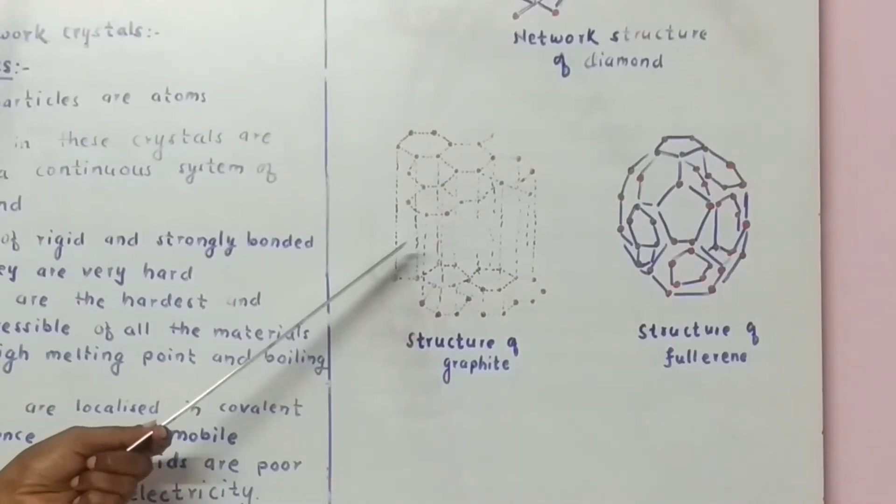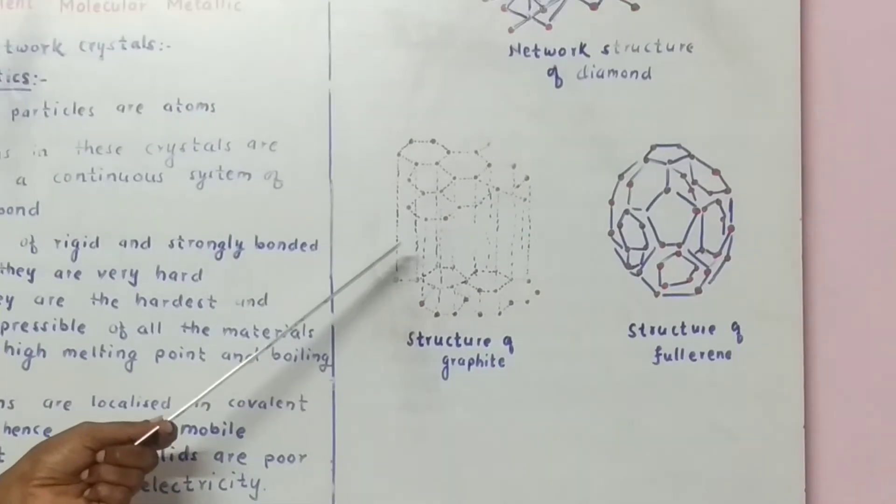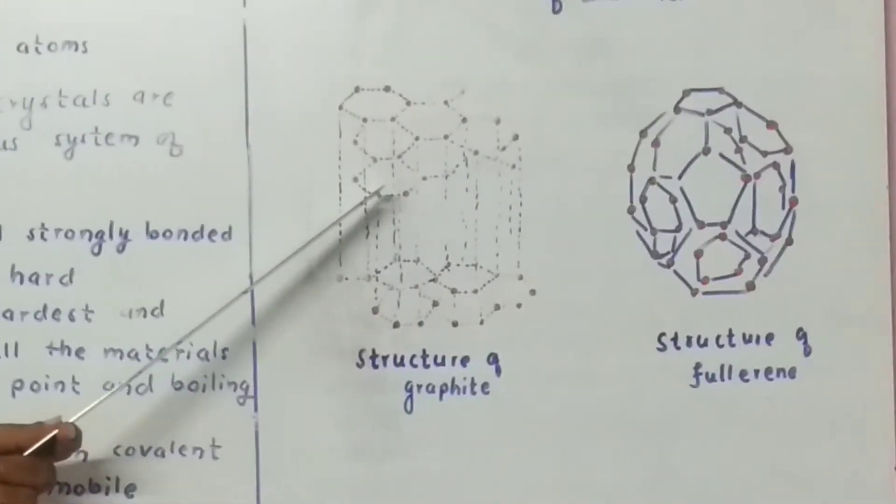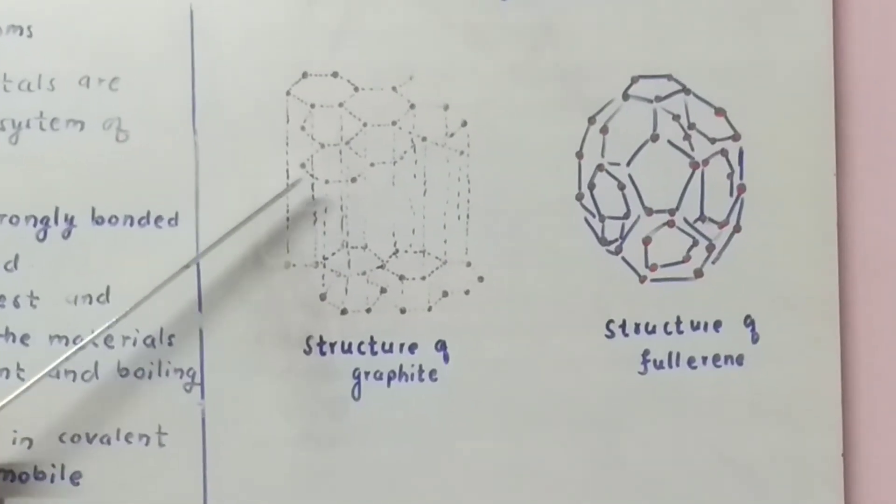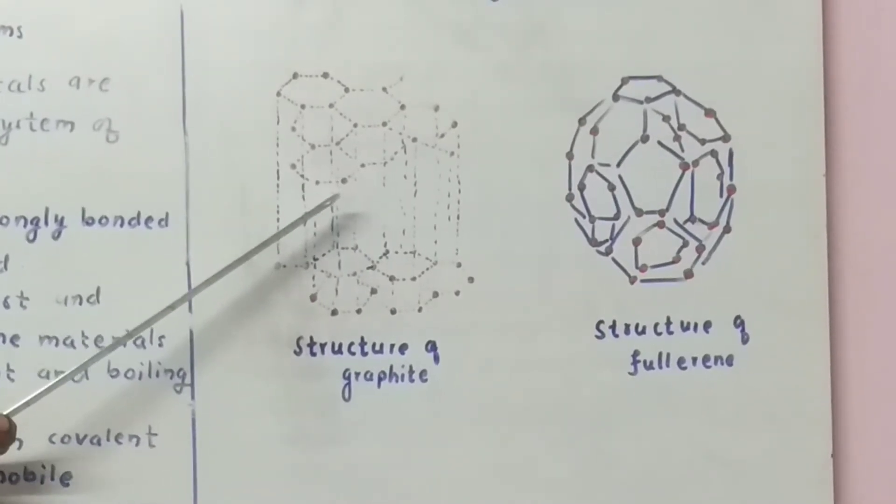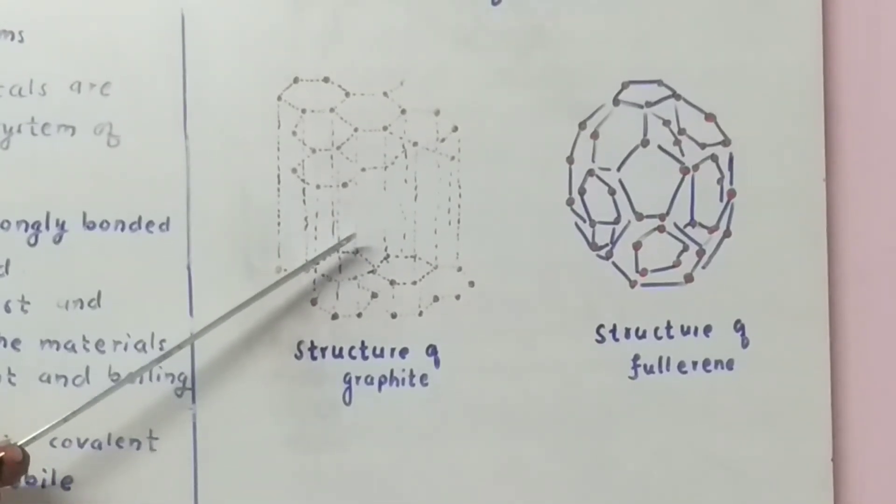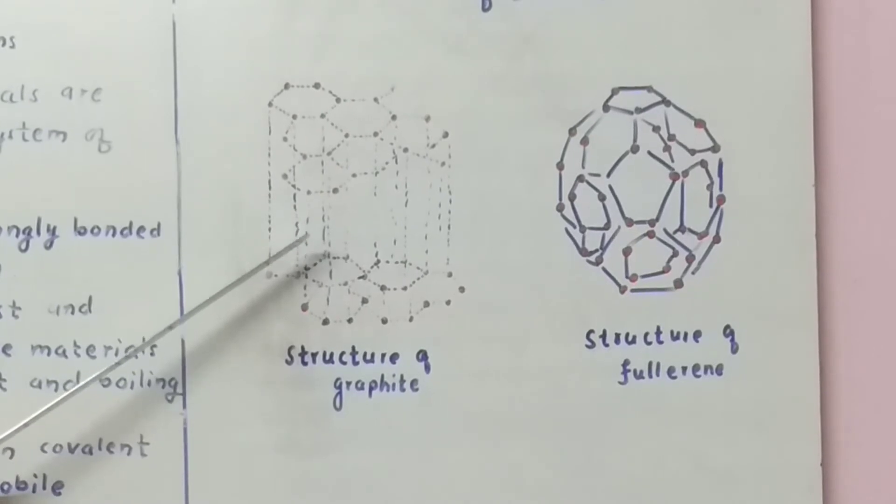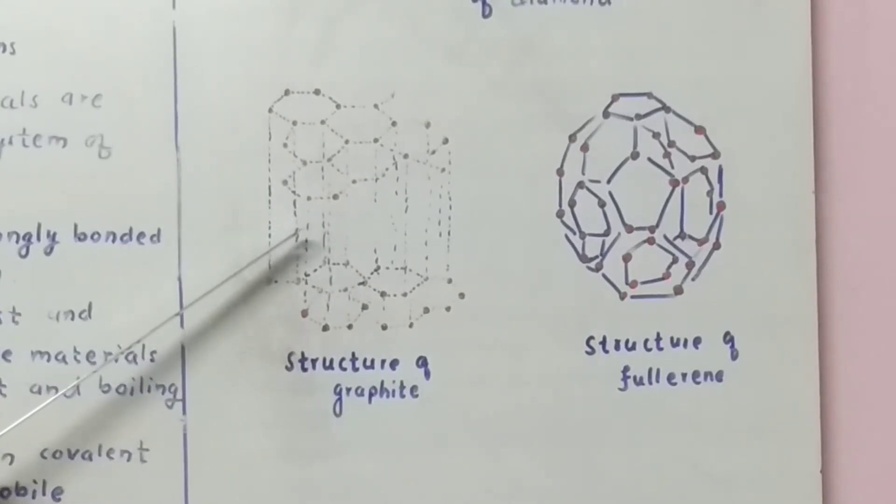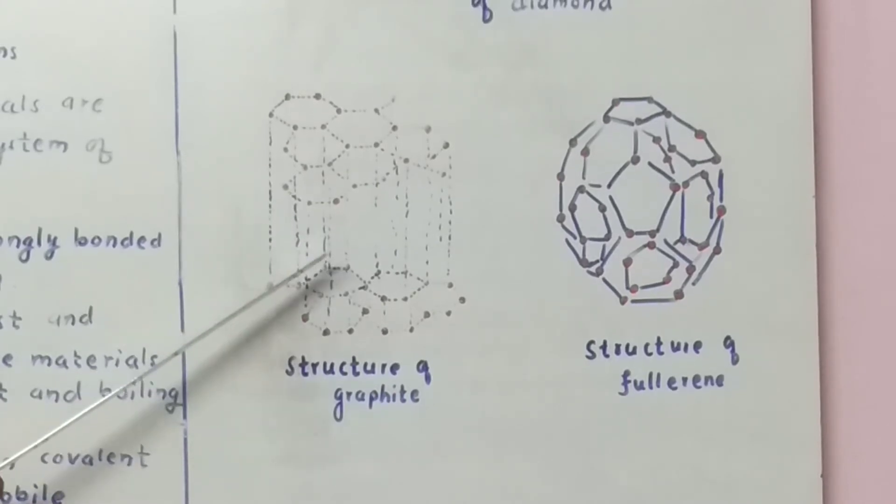To other 3 sp2 hybridized carbon atoms. And the fourth electron in unhybridized 2pz orbital is used for the formation of pi bond. This gives hexagonal two-dimensional ring of 6 carbon atoms.